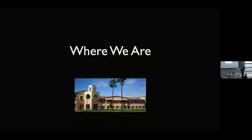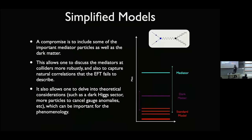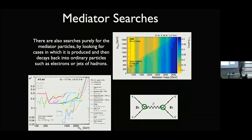So this is where we are today in the frozen north. A compromise is to include some of the important mediator particles as well as the dark matter. And this allows us to discuss the mediators at colliders more robustly. The worry with colliders is, does the EFT actually even live in a regime that applies to the collider? And of course that just depends on what the mass of the mediator is. It also allows you to delve into important theoretical considerations like, for example, if your mediator particle is a vector, then there should be some kind of dark Higgs sector, there's a dark gauge invariance, we need particles to cancel gauge anomalies, etc. And some of these details do matter for phenomenology. It also lets you just look for the mediators themselves directly, and so here are some examples of CMS and ATLAS doing that.